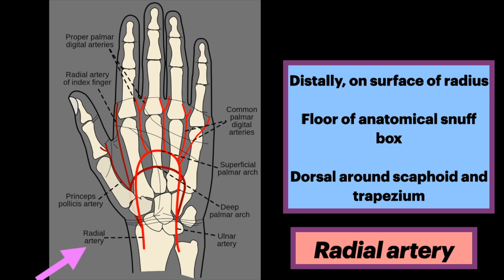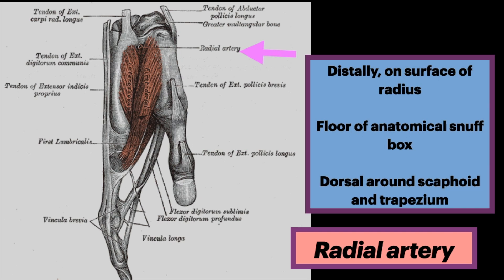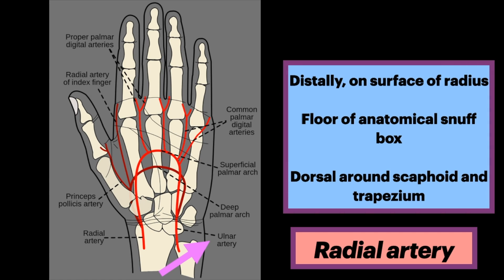For the distal section of its course, the radial artery lies on the surface of the radius. It proceeds along the floor of the anatomical snuffbox, passing dorsally around the scaphoid and trapezium. At the carpal region of the hand, the radial artery forms the deep palmar arch and anastomoses with the ulnar artery.